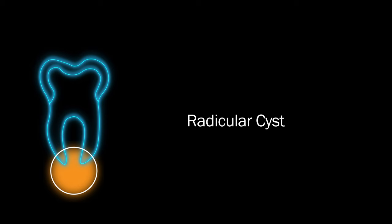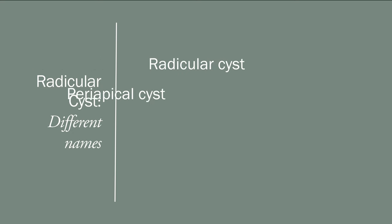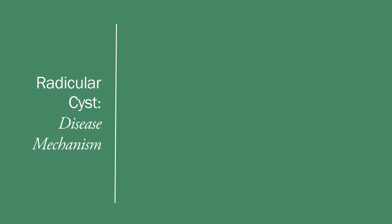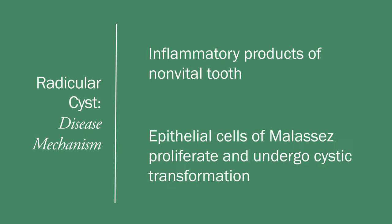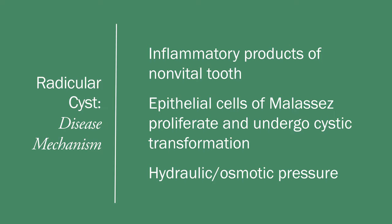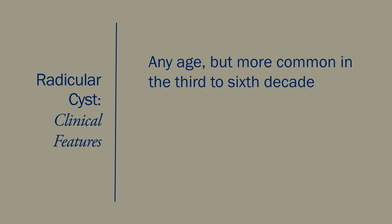Let's start with the radicular cyst. This cyst is around the apex of a tooth, and the tooth may be carious. A radicular cyst is also known as a periapical cyst or apical periodontal cyst; in the medical literature it is sometimes known as a dental cyst. This is how a radicular cyst forms: it starts with inflammatory products from a non-vital tooth. The epithelial cells of Malassez proliferate and undergo a cystic transformation. Clinically, most patients are in the third to sixth decade of life.